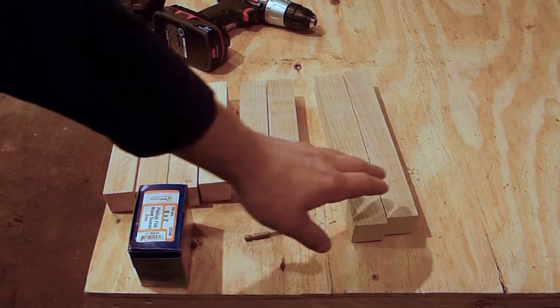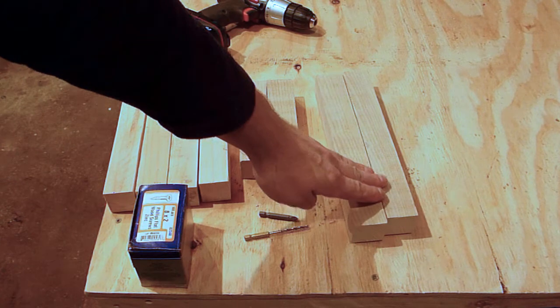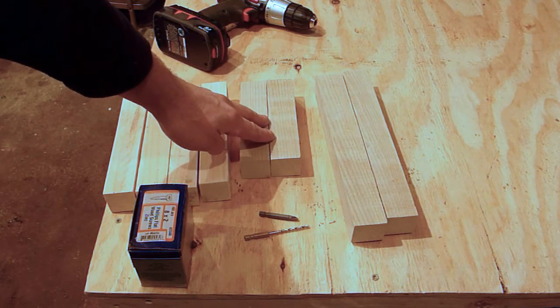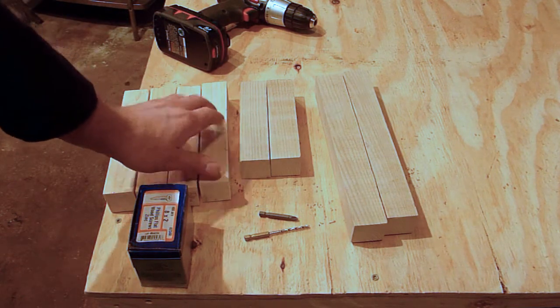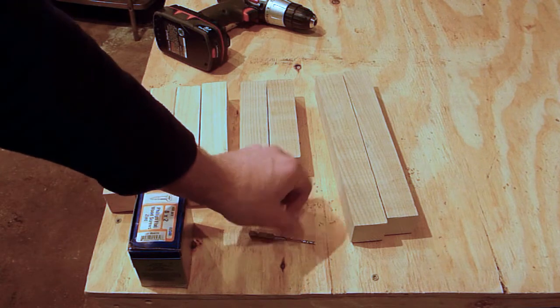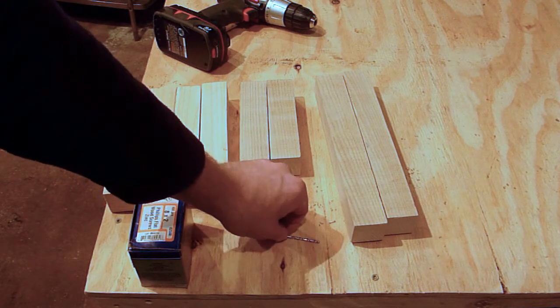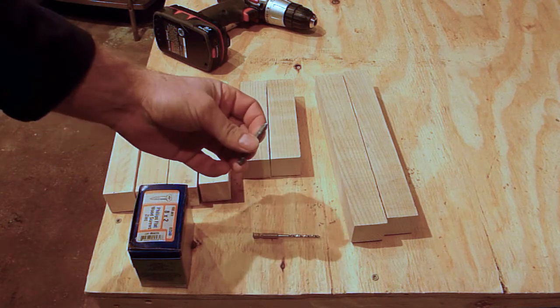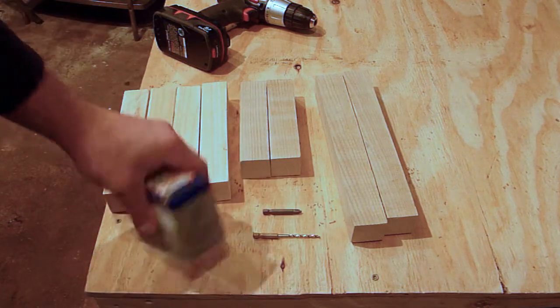To make the stool you're going to need two eleven and a half inch 2x2's, two six and three quarter inch 2x2's, and four eight and a quarter inch 2x2's. One eighth inch drill bit for pre-drilling the screws and the bit for the screws.